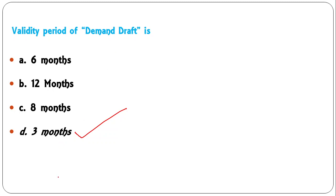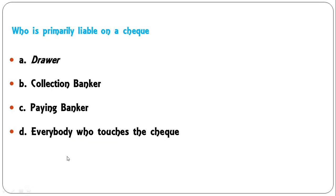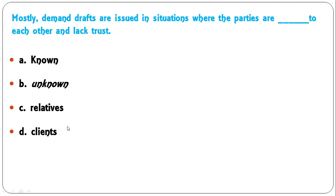Who is primarily liable on a check — drawer, collection banker, paying banker, or everybody who touches the check? The correct answer is drawer (A). The particular amount of money written on the check must be there, and that is the liability of the person writing the check. Moving to the next: demand drafts are mostly issued in situations where parties are unknown to each other and lack trust. So B (unknown parties) is the correct answer.